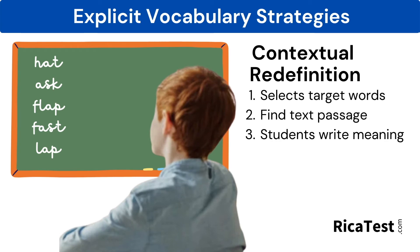In step three, the teacher is with the students in the classroom. The teacher presents the target words by either writing or projecting the words on the board. This is done in isolation — meaning in a list — and the students independently use their vocabulary notebooks to write the meanings of each word. For example: hat, ask, flap, fast, and lap. If a child doesn't know the meaning of a word, they simply write 'I don't know.'